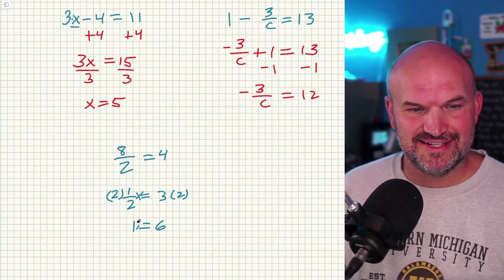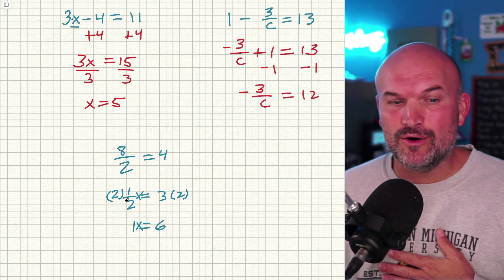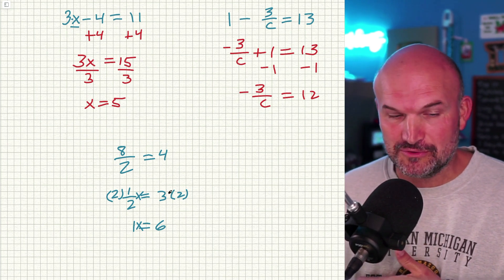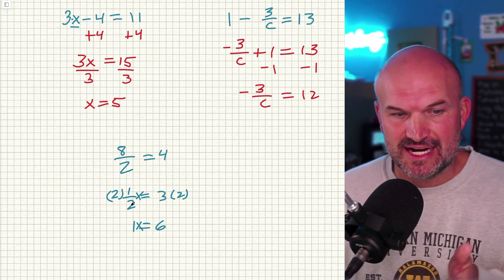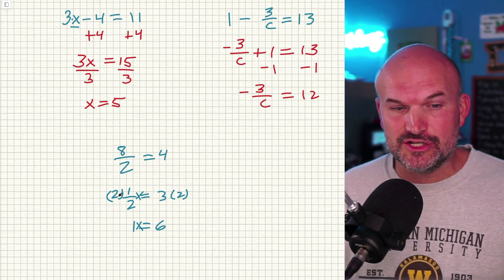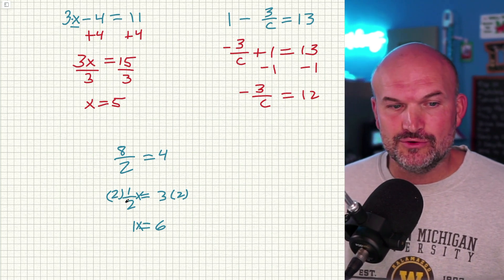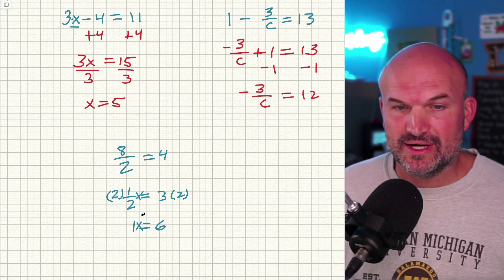So if you had like one half X equals three. If you multiply by two on both sides, since two evenly divides into two, I'm just going to get a one. And therefore I'm just left with one X equals six.